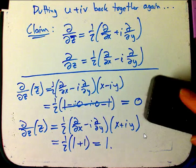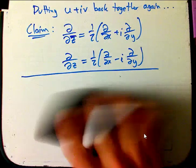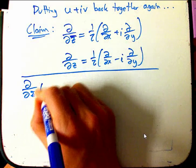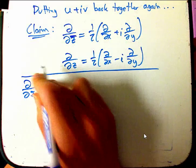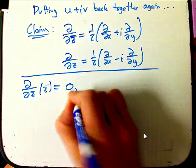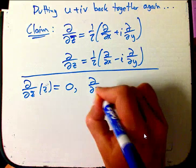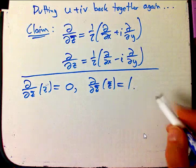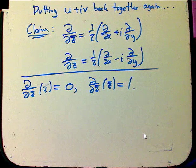So that's pretty cool. And I don't think I'll do it out explicitly. It's really, really similar. d by dz bar of z, just z, not z bar, is zero. And d by dz bar of z bar is one. And again, that's why the one-half has to be there if you do the calculation carefully.